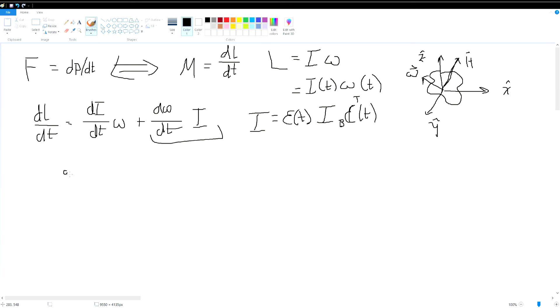So once again, we need to apply chain rule. So we're going to split this down. And what we end up with is d epsilon/dt I_b epsilon^T plus epsilon I_b d epsilon transpose over dt. So now we're left with this mess.